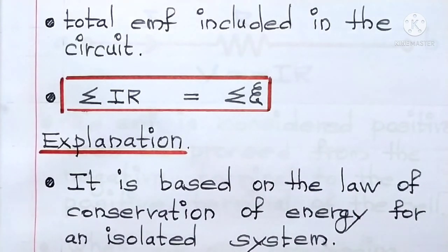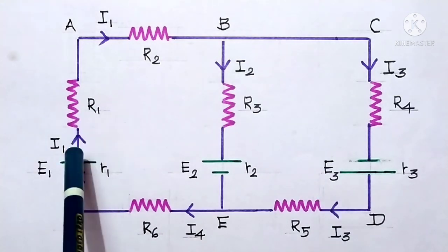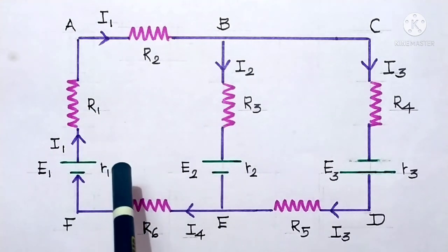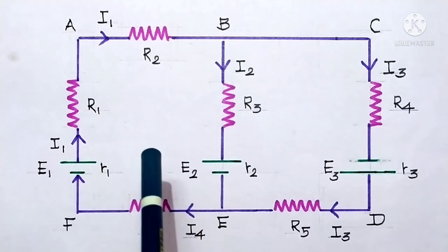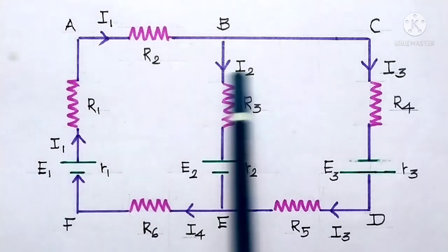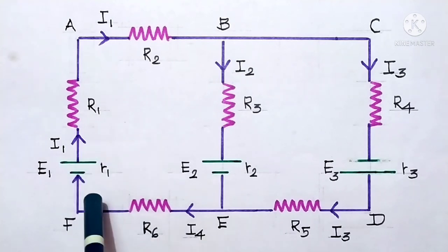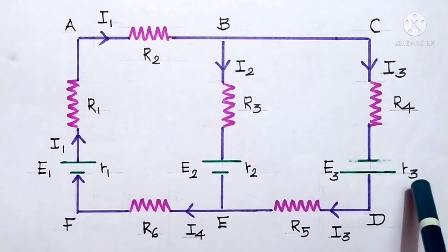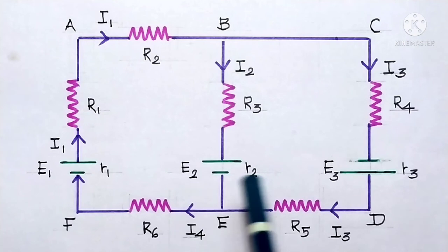For better understanding, let us learn Kirchhoff's second law with the help of a diagram. This diagram is not given in your textbook — it has been taken from another text for the sake of understanding. Here is a circuit with three cells and six resistors.